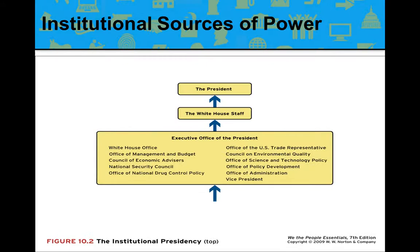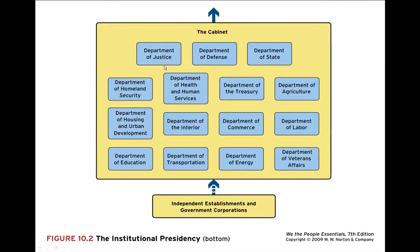Underneath the Executive Office of the President is the president's cabinet. Everyone who heads one of these cabinet posts is the Secretary of a department — the Secretary of Defense, Secretary of State, Secretary of the Treasury. The only one not called 'Secretary' is the head of the Justice Department, who is the Attorney General. These secretary positions are ones the president gets to appoint and the Senate must approve. Everyone else in these departments are career bureaucrats who have worked there for years and decades, dedicated to that particular mission.